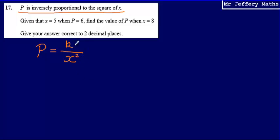Now what we're going to need to do first of all is find out what this constant is. What value is being divided by X squared to give us P? So to work that out...